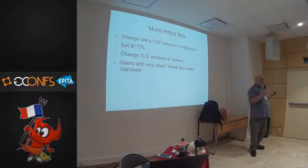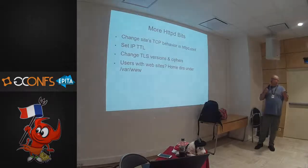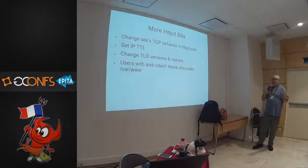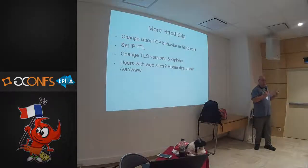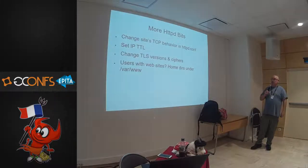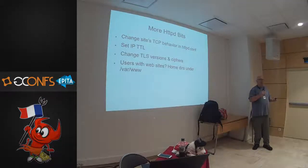Some things you can do — you shouldn't necessarily do these, but the internet is stupid and sometimes you have to. You can affect the TCP behavior of the web server in httpd.conf — set a time-to-live on your web server packets. If you don't want a website accessible outside the company, even if the firewall team screws up, put a TTL of 2 on your website packets and they can't leave the company. You can change TLS versions and ciphers — don't do that, the ciphers and versions were chosen by people smarter than you. If you have users with their own websites, put their home directories inside the chroot.